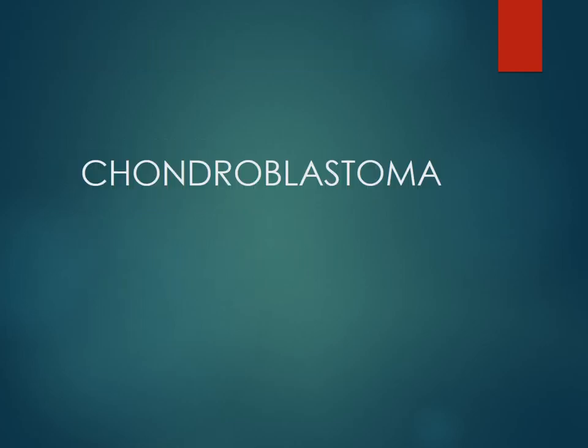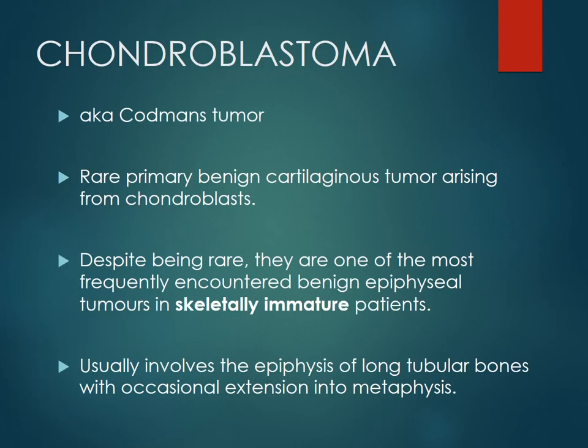Chondroblastoma, also known as Codman's tumor, is a rare primary benign cartilaginous tumor arising from chondroblast cells. Despite being rare, it is one of the most frequently encountered benign epiphyseal tumors in the skeletally immature patient — and we also have a skeletally immature patient.